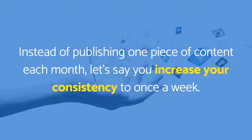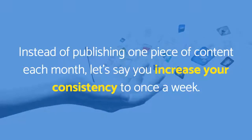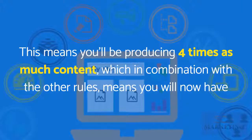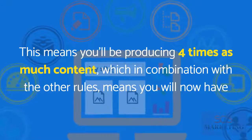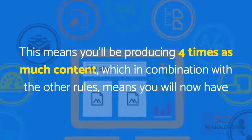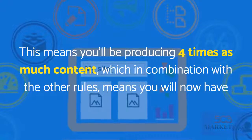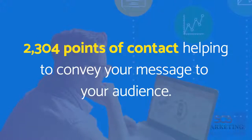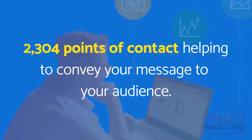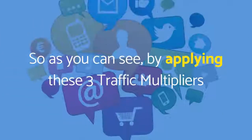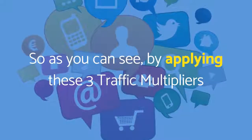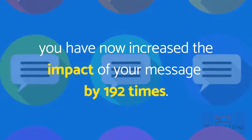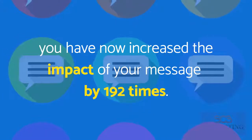Finally, let's apply the third traffic multiplier: consistency. Instead of publishing one piece of content each month, let's say you increase your consistency to once a week. This means you'll be producing four times as much content, which in combination with the other multipliers means you will now have 2,304 points of contact helping to convey your message to your audience.